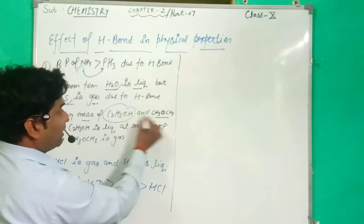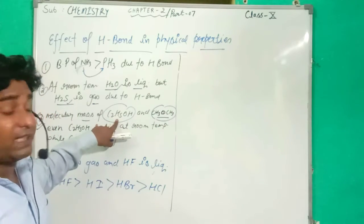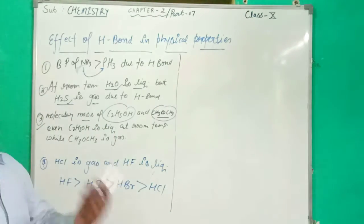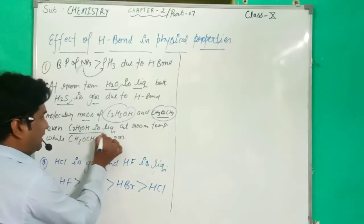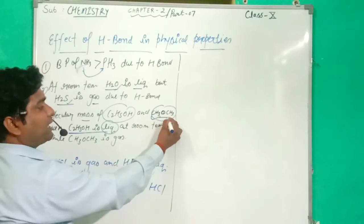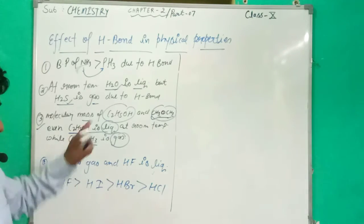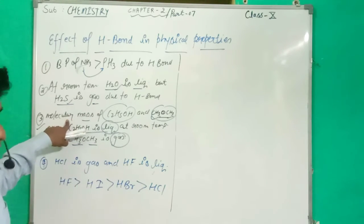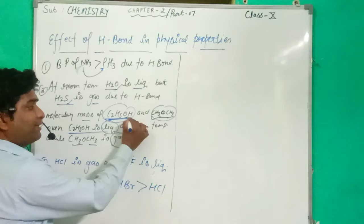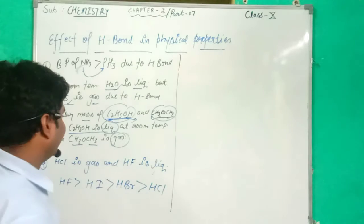Next case: ethyl alcohol and dimethyl ether have the same molecular mass but different physical states. Ethyl alcohol is liquid at room temperature, while dimethyl ether is a gas at room temperature, even though they have the same molecular mass. Due to Hydrogen Bonding, ethyl alcohol has the liquid state because ethyl alcohol contains Hydrogen Bonds within its molecules.